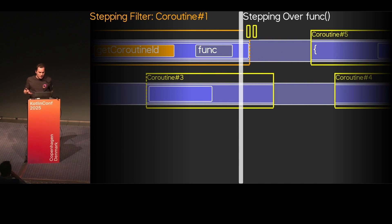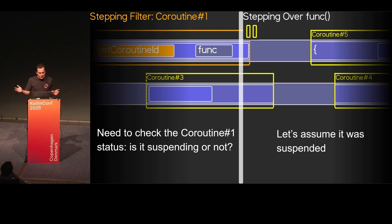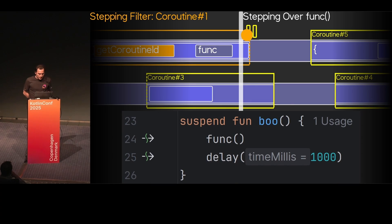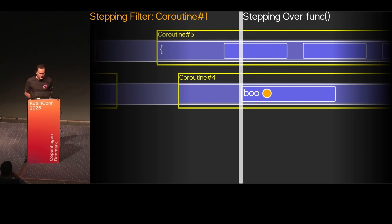Then we perform stepping in the JVM sense. After this, we need to understand whether we are going to a suspend point or we just finished our stepping. If we are not going to suspend, we show the user interface and say that stepping is over — you can continue to debug. But if we did go to a suspend point, we need to set a special breakpoint on our function boo, and from this moment we wait until we hit function boo again, but in our coroutine.